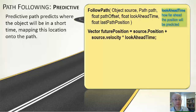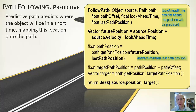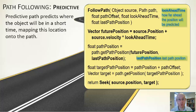The predictive method is very similar. First we compute the future position: take the current position and add the velocity multiplied by the look-ahead time. Having done that we do essentially the same thing as before — we call getPathPosition passing in the future position and also the last path position. We work out the target path position, go back to the path to find the actual XY coordinate, and seek towards that position.